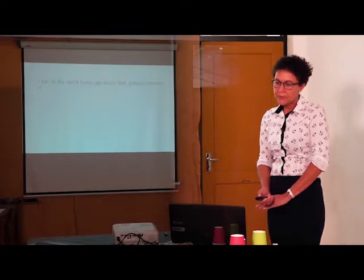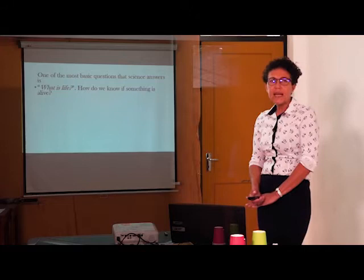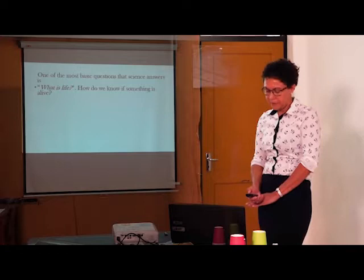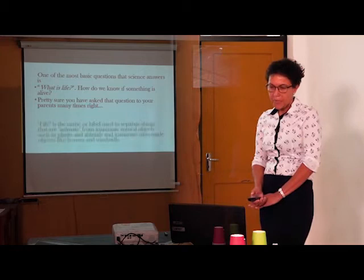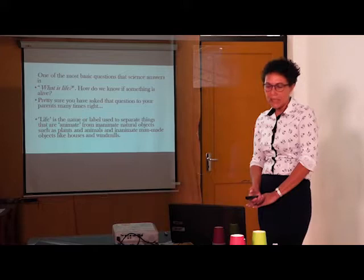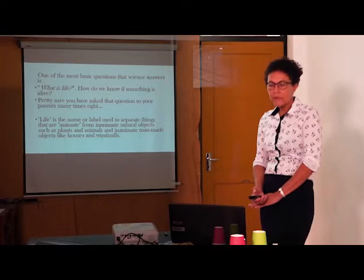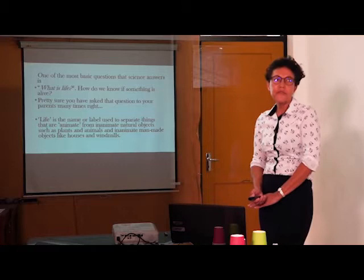One of the most basic questions science answers is: what is life? How do we know something is life? Pretty sure you have asked that question to your parents many times. Life is the name or label used to separate things that are animate from inanimate. Natural objects such as plants and animals are animate, and inanimate are man-made objects like houses and windmills. These are only a few examples and we will learn a little bit more.